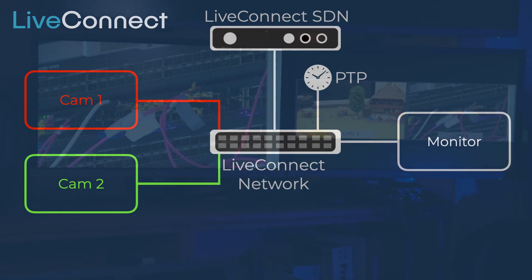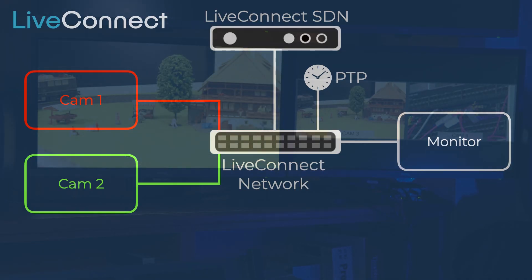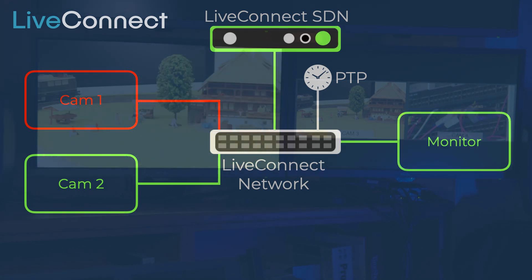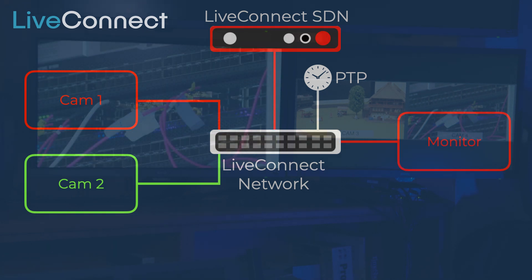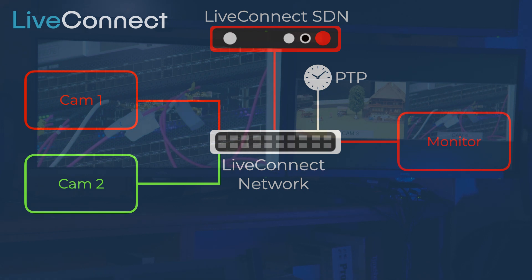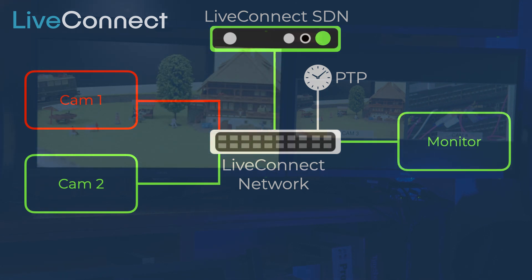So this problem is something that we are solving with the LiveConnect video clean switching. Behind me on this screen you have two sources, and over here you have a program out which is switching between those two sources every two seconds. Let me explain that again on this schematic: we have a script that is telling our SDN controller to make a switch every two seconds. Our SDN controller is telling our network to make a clean switch between the two sources every two seconds, and the result you see in this close-up.